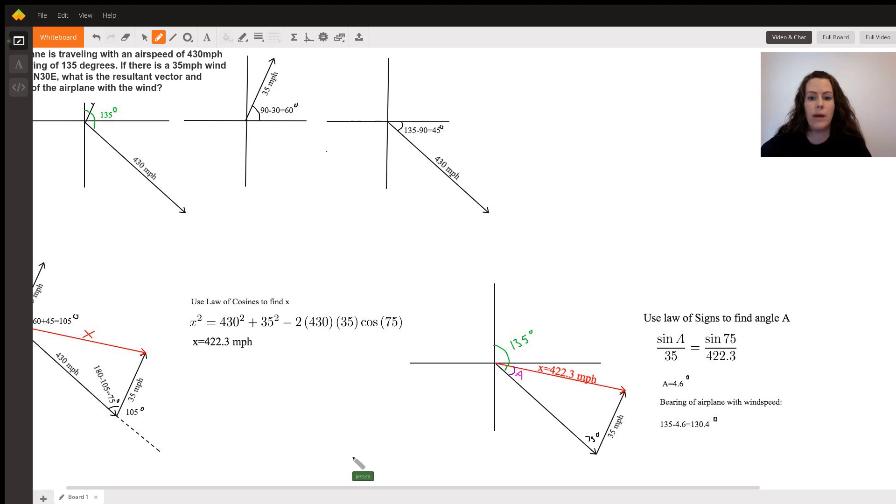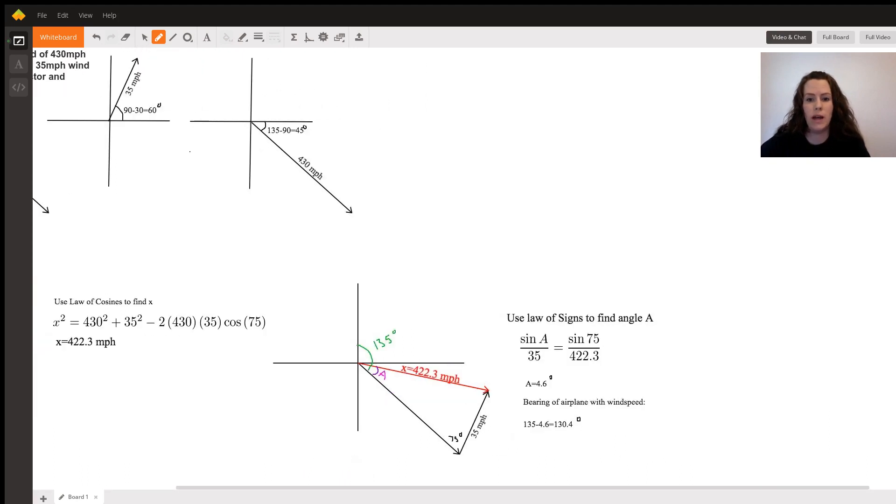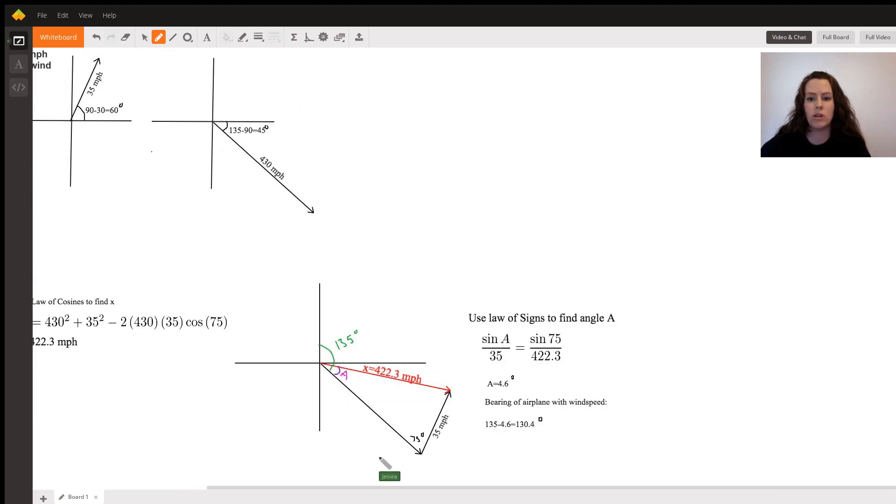Part two, we need to find the bearing of the airplane with the wind speed. And as we go to this last picture, you can find that by using the information that we've just found. So we're going to use that 75 degrees again that we had already found, the 35 mile per hour wind speed, and also the new speed of the airplane with the wind, which was 422.3.